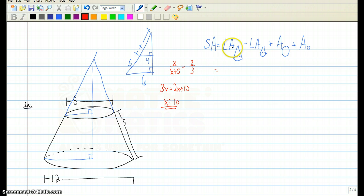We'll plug these numbers in then. The lateral area for the big cone is pi times the radius of six times the slant height of 15.